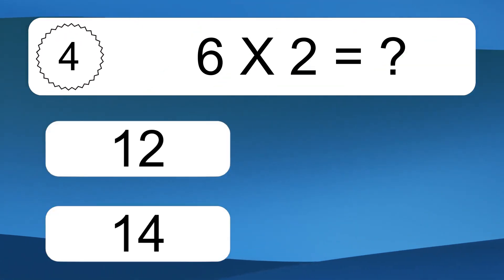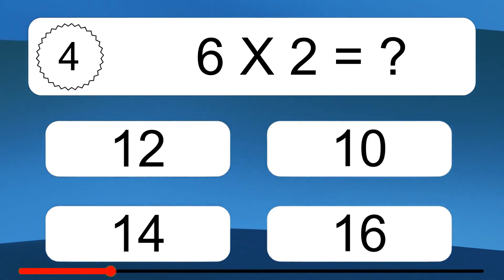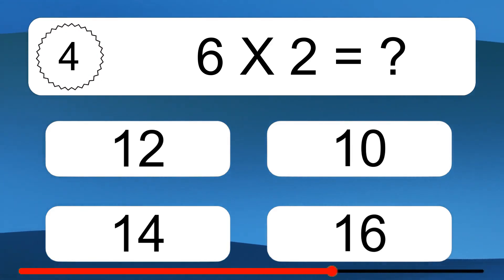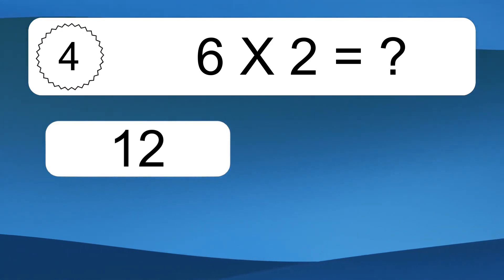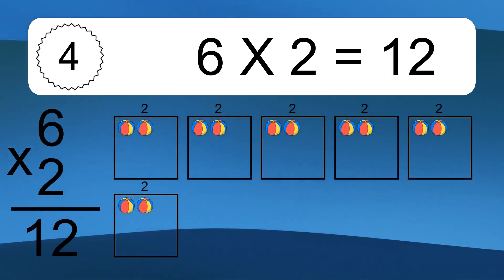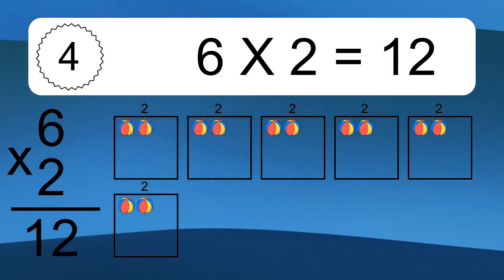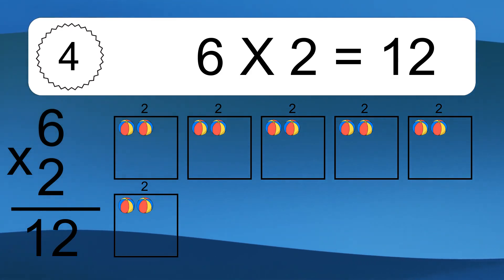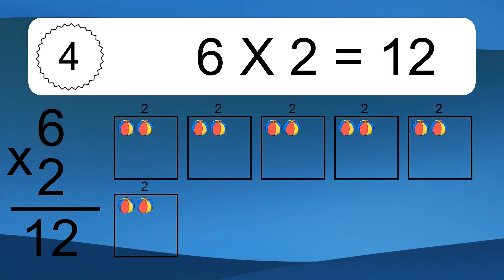Six times two equals what? We have six boxes, and each box has two colorful balls inside. If you count all the balls in all the boxes together, you will have six times two balls. This equals twelve balls.